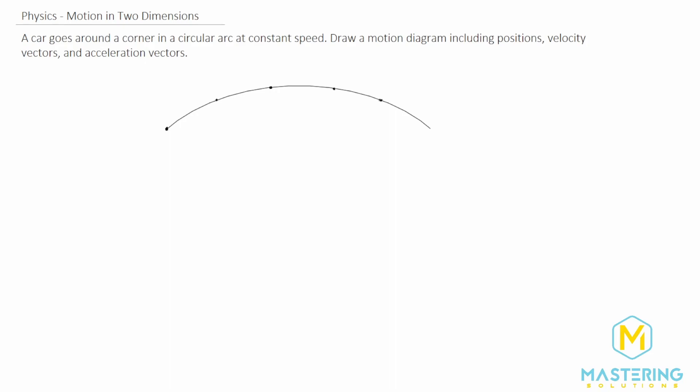The constant speed, like I said, just means that the distance between these won't change at all. So now what we're going to do is draw the velocity vectors.